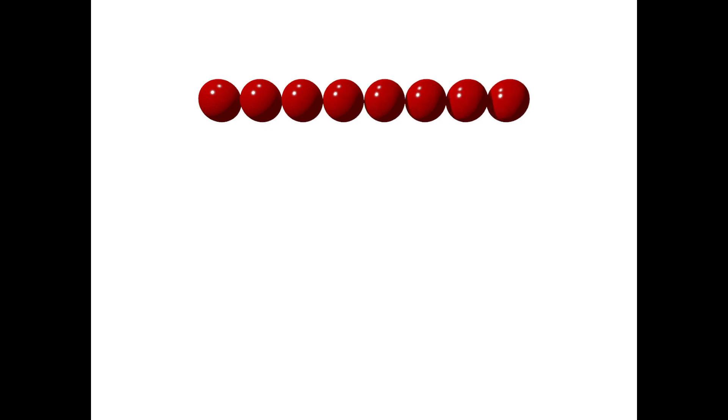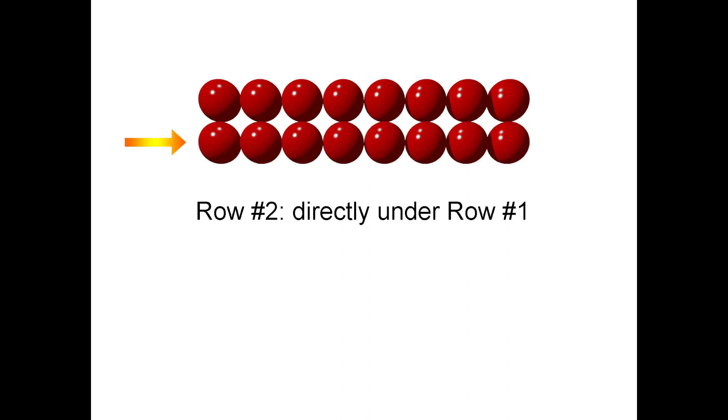The question now becomes how do we place the second row? Let's try placing a second row directly under the first row such that all of the balls are aligned vertically with one another.